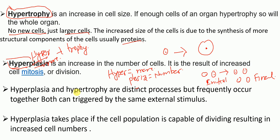Hyperplasia and hypertrophy are distinct processes but frequently occur together, and both can be triggered by the same external stimuli. Hyperplasia takes place if the cell population is capable of dividing, resulting in an increased number of cells.